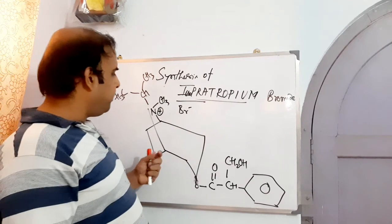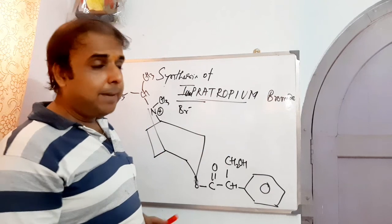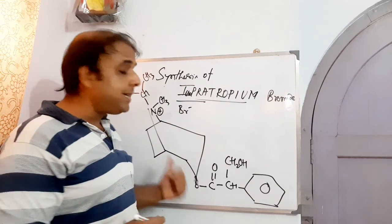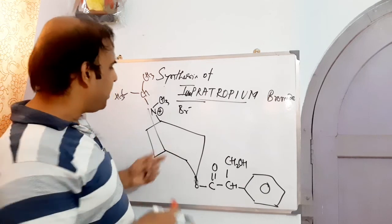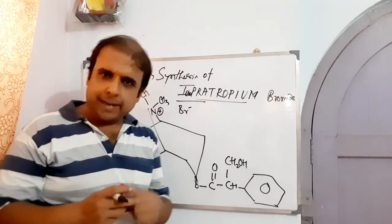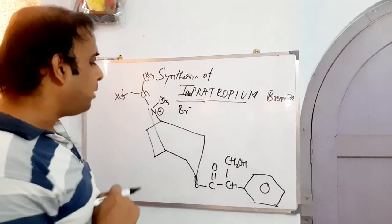If you have gone through my videos, I have already made a video on bicyclic nomenclature, bicyclic system nomenclature. Please go through it if you are not thorough with the naming of bicyclic systems. So how does the nomenclature go?